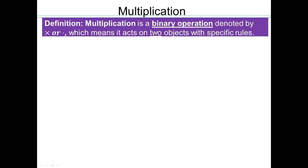In this lecture, we're going to talk about the second arithmetic operation, which is multiplication. When working with whole numbers, you can think of multiplication as repeated addition. So without addition, we do not have multiplication. Multiplication is also a binary operation, and we'll denote it by this cross sign, or the x sign, or sometimes with a little dot. And it also acts on two objects with some specific rules.